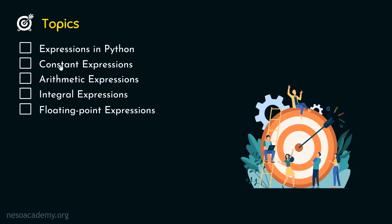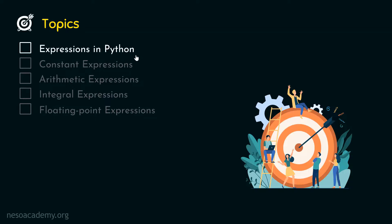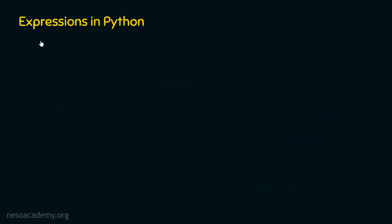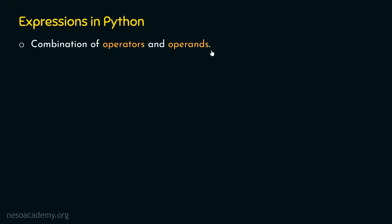Let's get started with the first topic: expressions in Python. What is an expression in Python? An expression in Python is simply a combination of operators and operands. There can be more than one operator and more than one operand in an expression. One thing we need to remember is that an expression always evaluates down to a value.